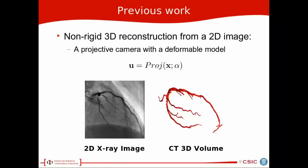In the second work, we were dealing with non-rigid 3D reconstruction from a single 2D image, like the ones that appeared in the heart, where we have a 2D x-ray image and a computed tomography volume of the heart.